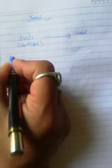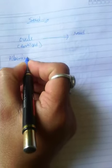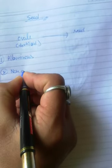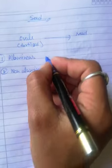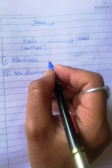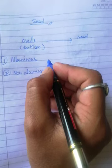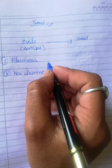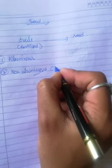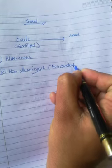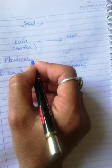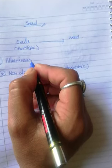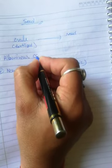There are two types of seeds. The first type is called albuminous seeds and the second type is called non-albuminous seeds. The difference is: in some seeds the endosperm is completely consumed, so if there is no endosperm inside the seed it is called non-endospermic or non-albuminous. In some seeds a small amount of endosperm remains — these are called albuminous seeds, meaning the endosperm persists.